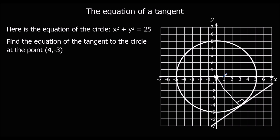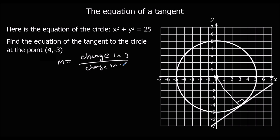We can use that to work out the gradient of the tangent. First, we need the gradient of the radius line. Gradient is change in y divided by change in x. The change in y is -4, and the change in x is +3. So the gradient of the radius is -4 over 3.